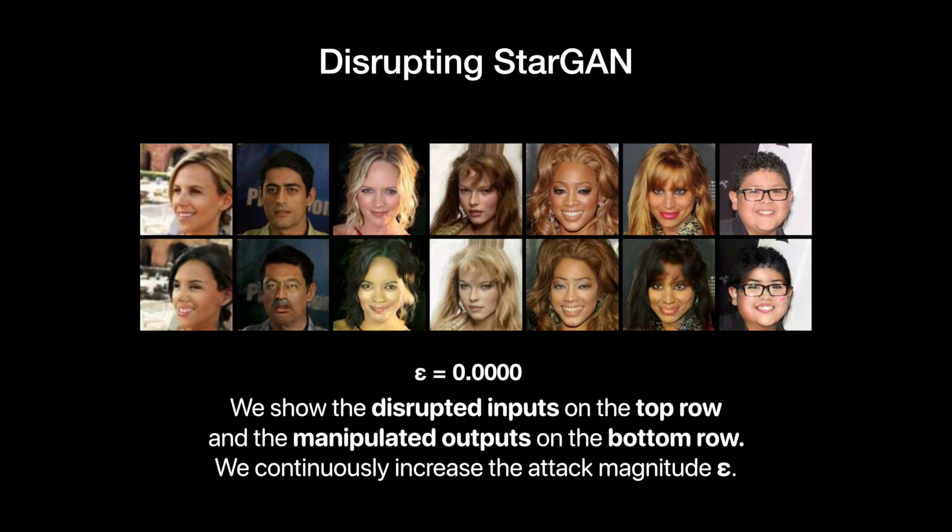Disrupting StarGAN. We show the disrupted inputs on the top row and the manipulated outputs on the bottom row. We continuously increase the attack magnitude epsilon.